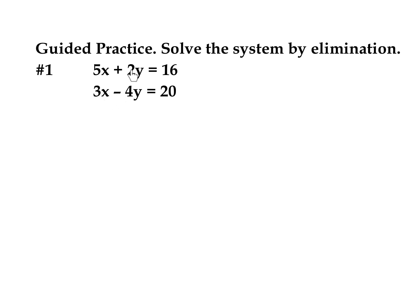But we can see that if I multiply this 2 by 2, I'd have 4y and negative 4y, and those would be able to eliminate. So in order to get this to be a 4y, I have to multiply the entire equation by 2. So I'm going to take this entire equation and multiply it by 2, and I'm going to get a new equation that's 10x plus 4y equals 32. It's a new but equivalent equation, because we did the same thing to everything on both sides of the equal sign — that's a property of equality.